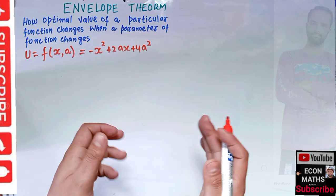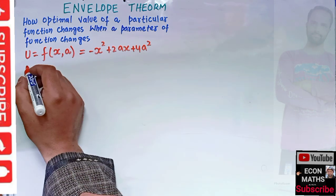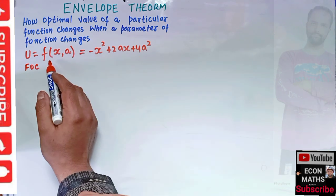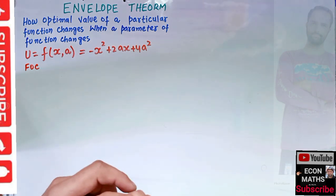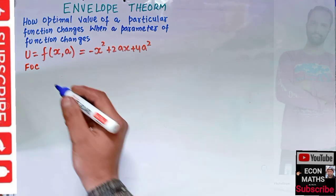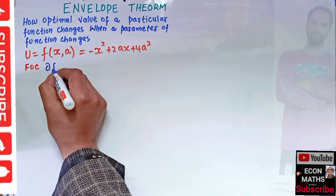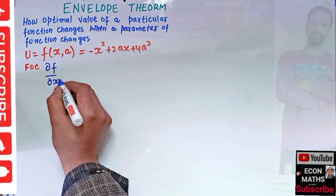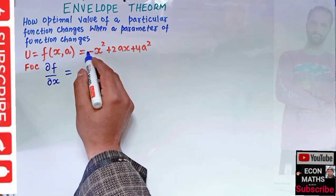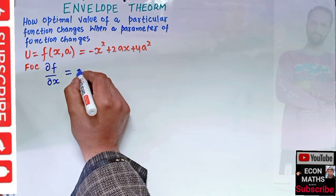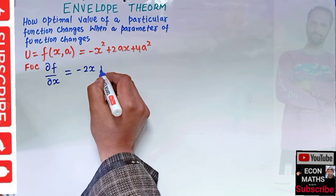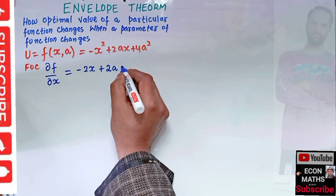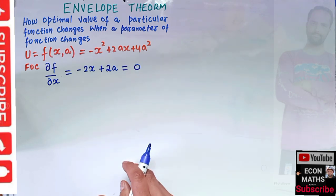The first order condition for optimization requires that we take the partial derivative of this function with respect to x and set it equal to zero. When we do that, we get minus 2x plus 2a equals zero.